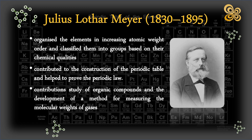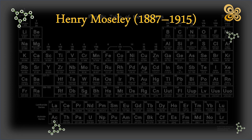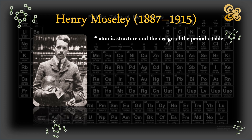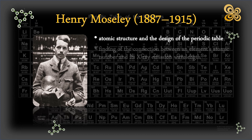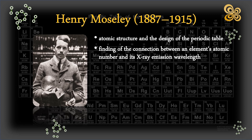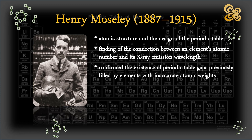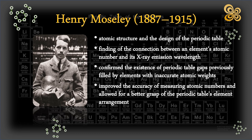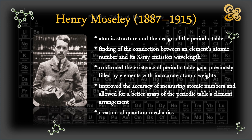British physicist Henry Moseley made significant contributions to our understanding of atomic structure and the design of the periodic table. His work helped to confirm and refine the periodic table produced by Dmitri Mendeleev and Julius Lothar Meyer. His most important discovery was finding the connection between an element's atomic number and its X-ray emission wavelength. He discovered that by analyzing the X-ray spectra of various elements, he could establish their atomic numbers with more accuracy than was previously achievable. This research confirmed the existence of periodic table gaps previously filled by elements with inaccurate atomic weights. Moseley's work improved the accuracy of measuring atomic numbers and allowed for a better grasp of the periodic table's element arrangement, also aiding the creation of quantum mechanics.